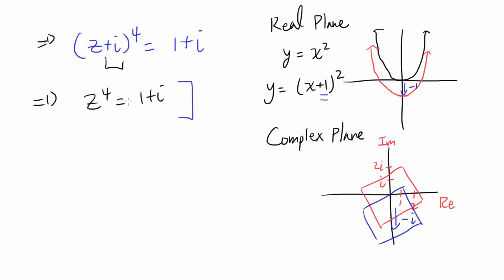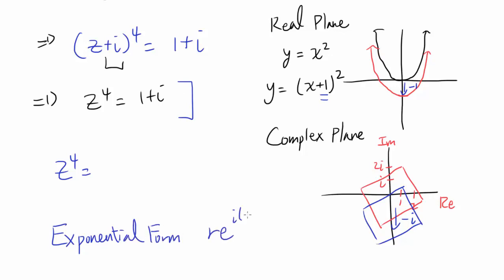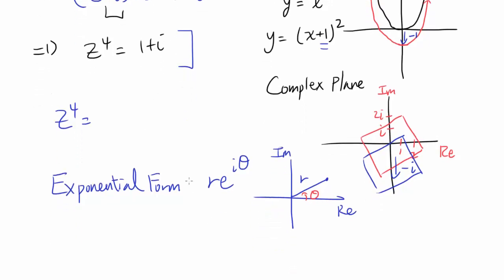Whenever you have powers of a complex variable, it's always nice to write everything in exponential form: r times e to the i·θ, where r is the distance from the origin and θ is the angle from the positive real axis.